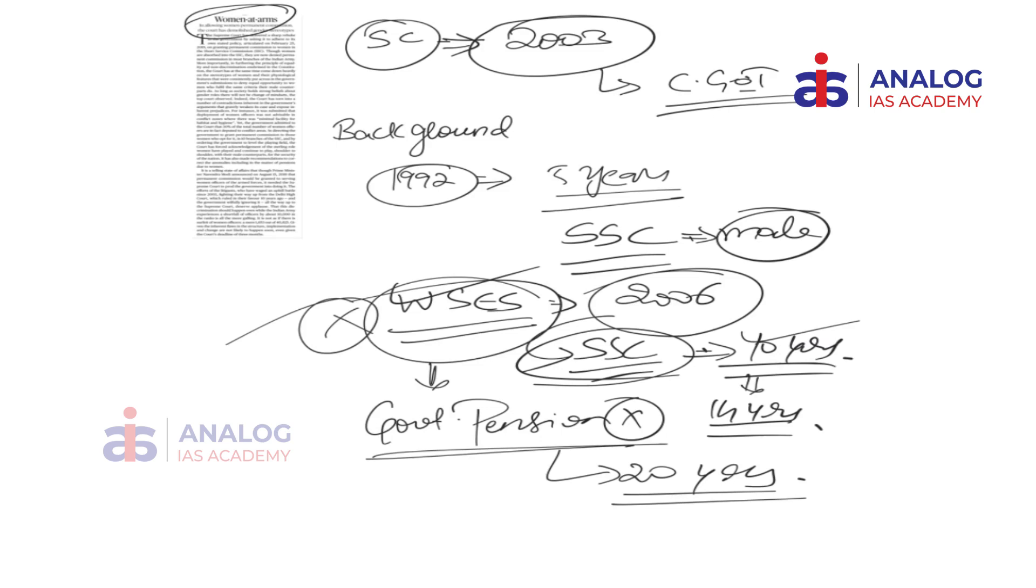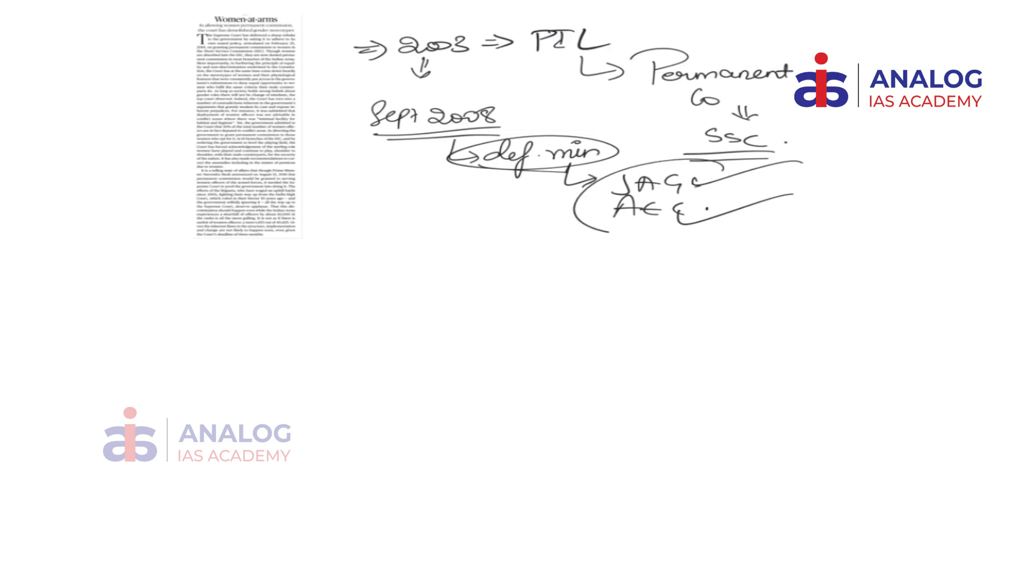The first batch of women officers under the new scheme entered the army in 2008. In 2003, a public interest litigation was filed before the Delhi High Court for granting permanent commission to women SSC officers in the army. In September 2008, the Defense Ministry allowed permanent commission for women officers in two particular departments: the Judge Advocate General Department and the Army Education Corps, but not all departments. This order was challenged because it was selective in nature and not on par with men. In 2010, the Delhi High Court passed an order saying that all women who retired during judicial proceedings would have to get benefits on par with men.